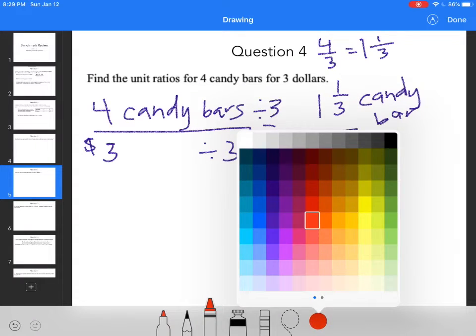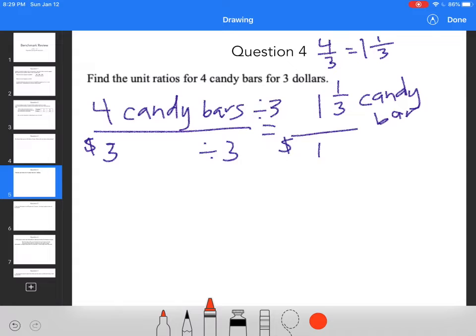Then I'm going to do the other one. So I would flip it over. So now it's $3 for four candy bars. So I want to know how much is just one candy bar going to cost me.